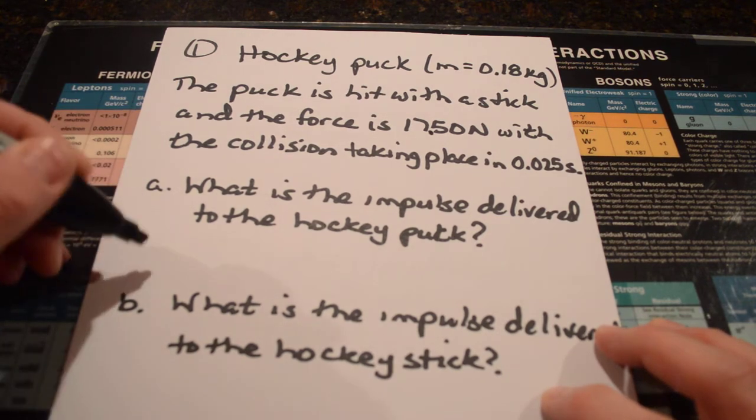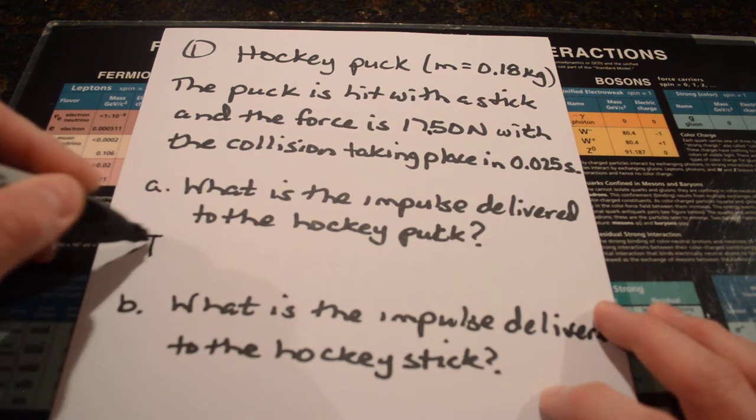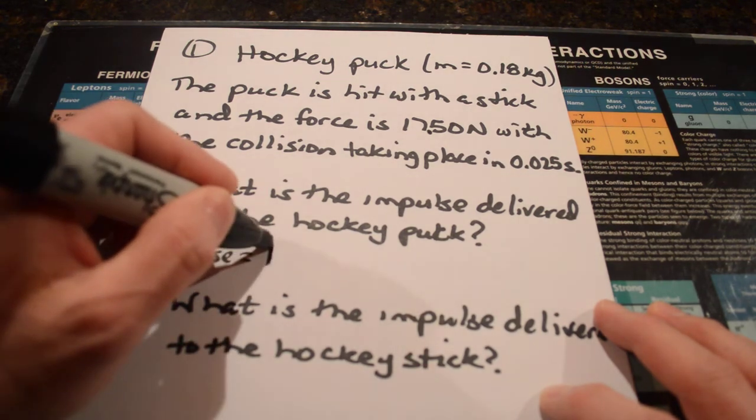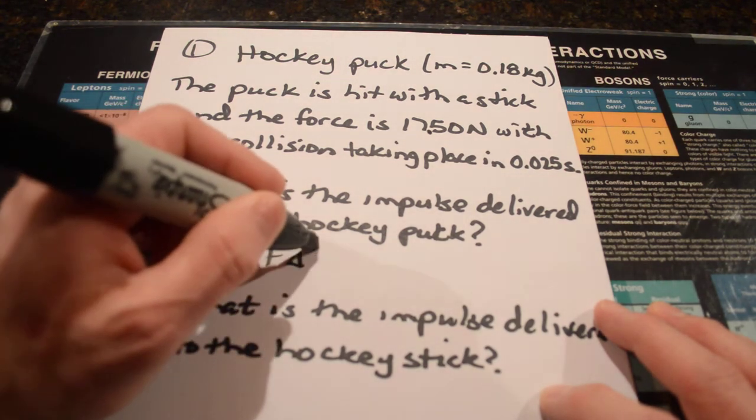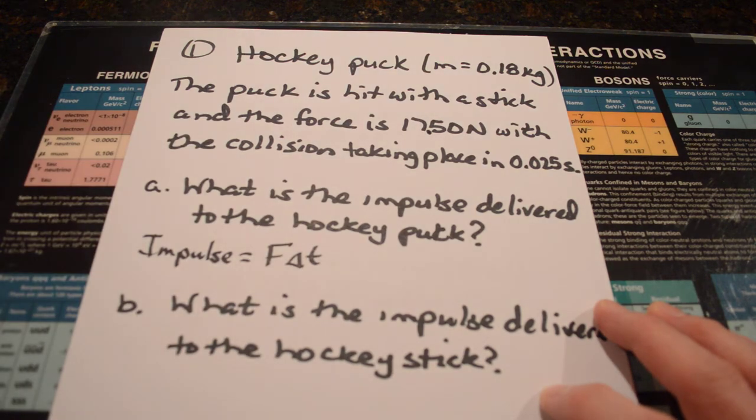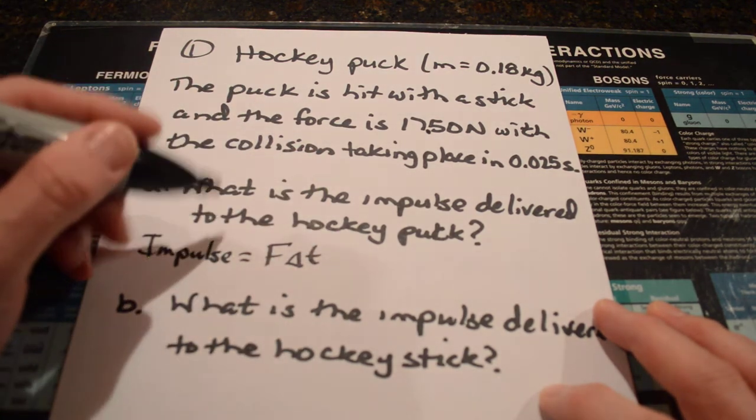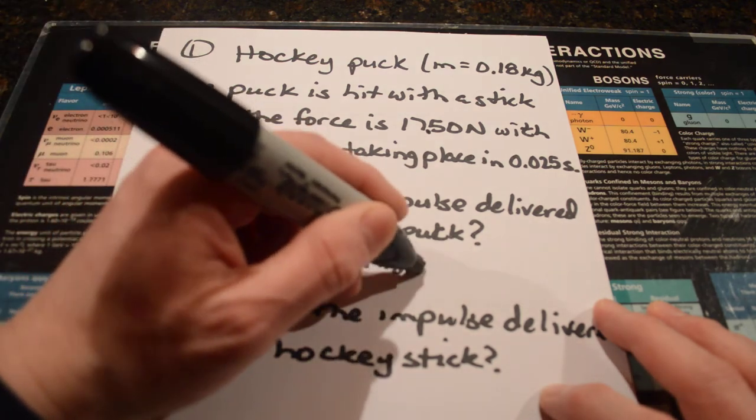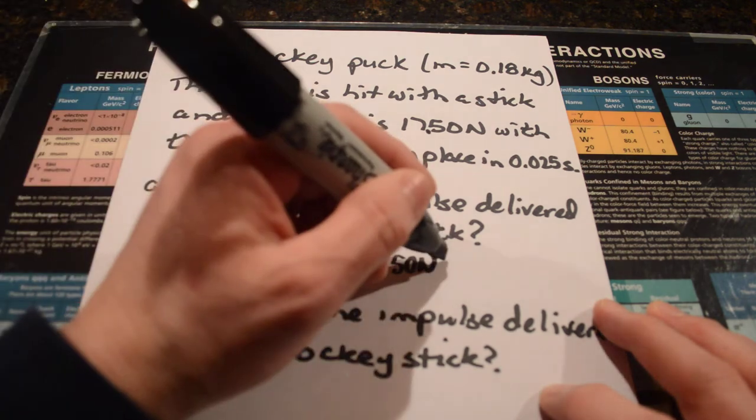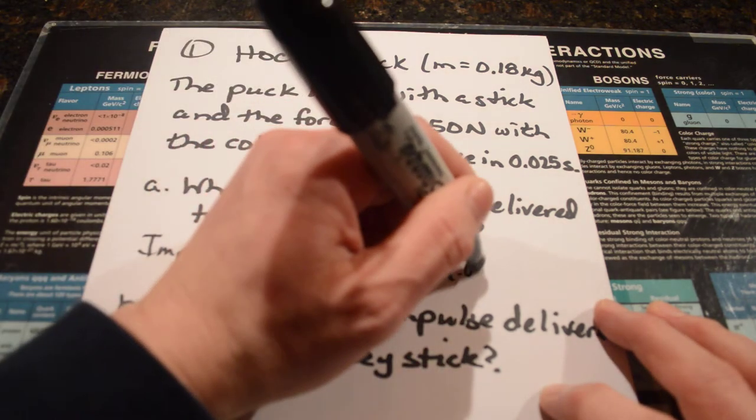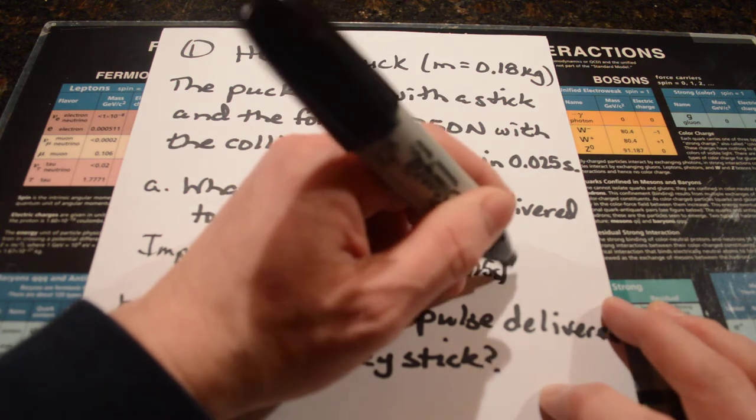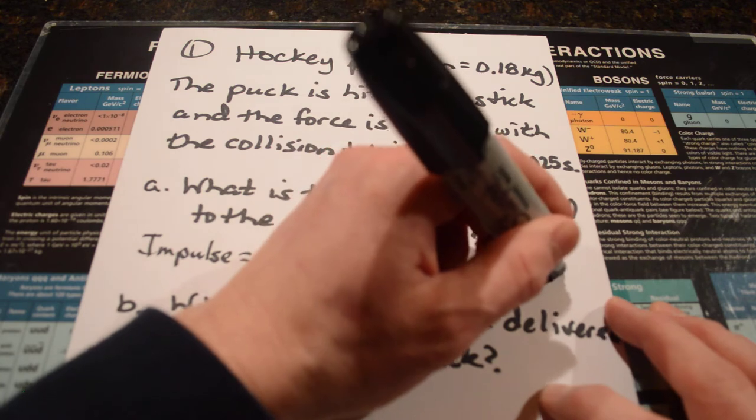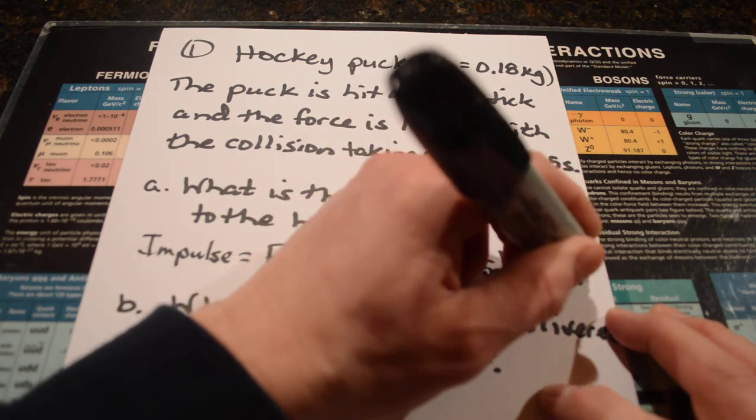Now, we didn't really use a symbol for impulse. The impulse, we calculated it two different ways. But in this case, we're just going to say that it's force multiplied by the time interval that the collision takes place. In this case, that's a 17.50 newton force and 0.025 seconds of time. And if you do that, that gets you 0.438 and it's newton seconds.